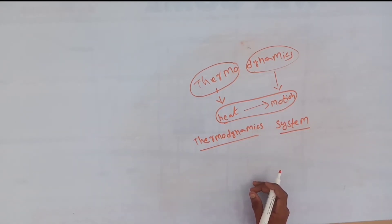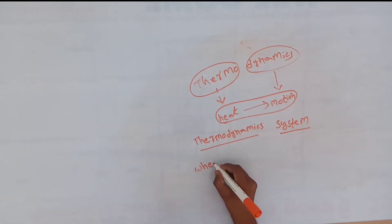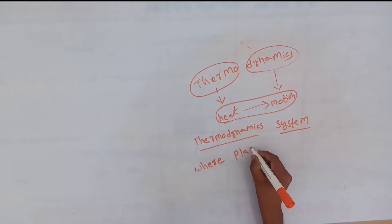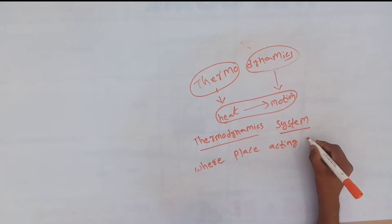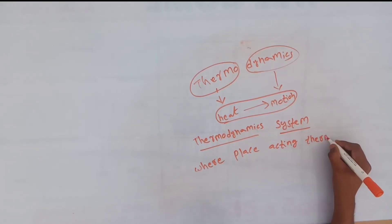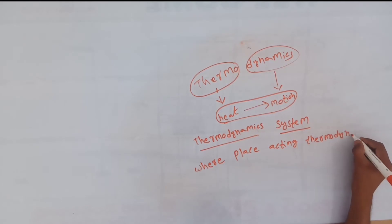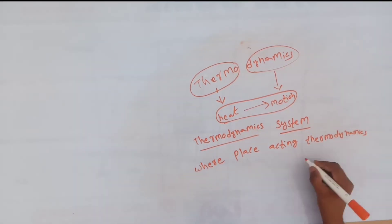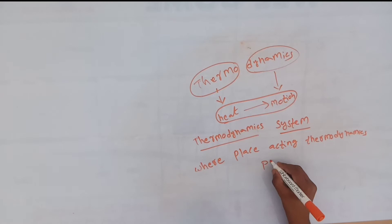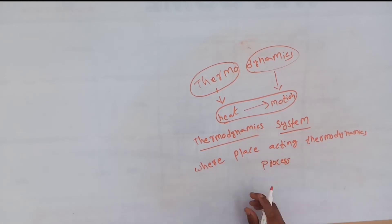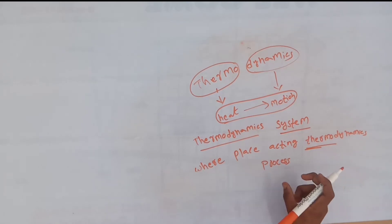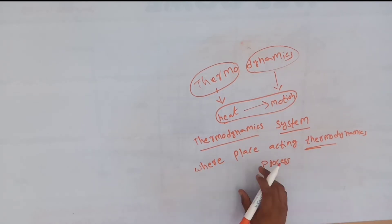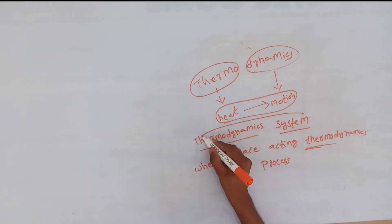Simply, we are going to do this. Where a place is acting on a thermodynamics process — that place is where a thermodynamics process acts. Here we are going to define the thermodynamics system. Okay?